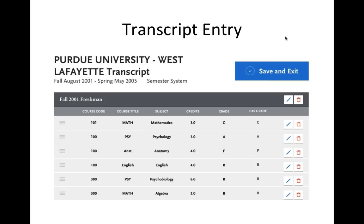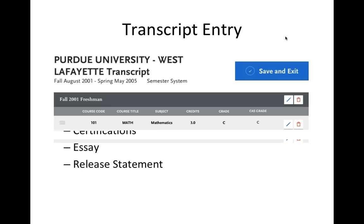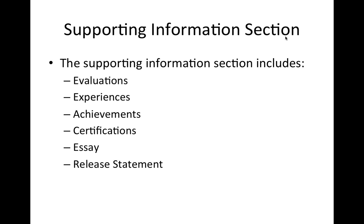An important note: the CAS grade, seen here in the far right column, is automatically calculated, and that grade is used to calculate your GPAs during the verification process.